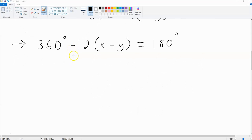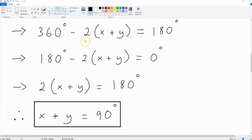Now, because a plus b is equal to 180 degrees, this implies that 360 degrees minus 2 times x plus y is equal to 180 degrees. If we subtract 180 degrees from both sides of the equation, we get 180 degrees minus 2 times x plus y is equal to 0 degrees.